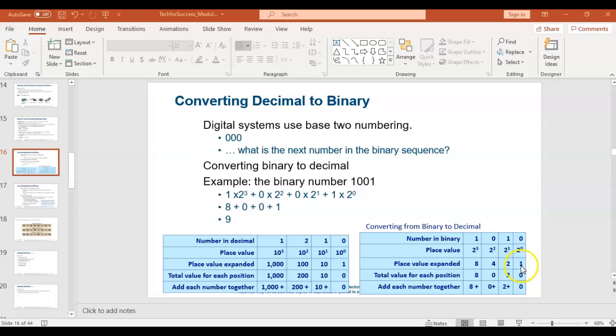Now we know that's one, two, two to the second which is four, two to the third which is eight. Zero times one is zero, one times two is two, zero times four is zero, and one times eight is eight. Add these together: eight plus zero plus two plus zero gives me ten. That tells me that the number 1010 in binary is equal to ten in decimal.